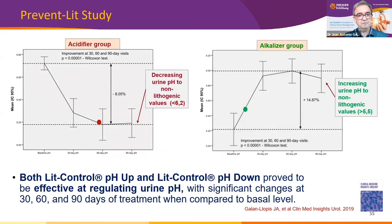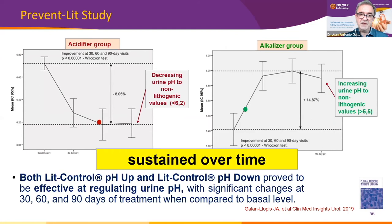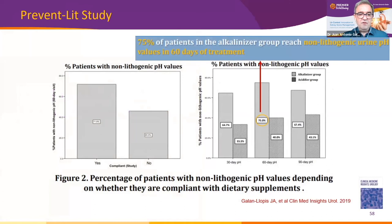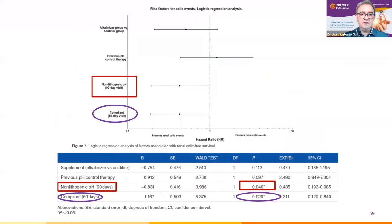Both Lead Control pH Up and Down had a sustained effect over time throughout the whole study period. When we analyzed the effect of treatment compliance at 60 days, we saw that 72 percent of compliant patients and 46 percent of non-compliant patients achieved non-lithogenic pH range. For those with compliance up to 75 percent in the alkalizer group, weekly Lead Control pH Up reached non-lithogenic pH values at the second visit. Logistic regression analysis found that non-lithogenic pH at 90 days and compliance at 60 days were independently associated with colic-complaint-free survival.